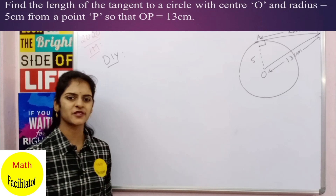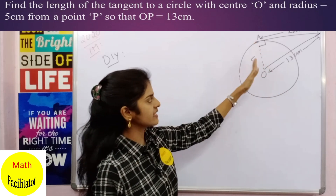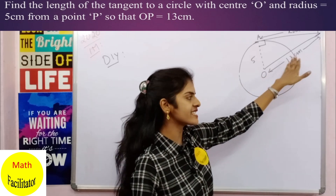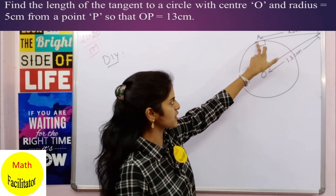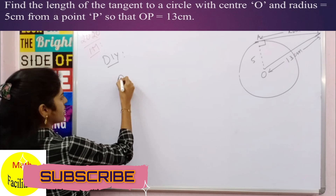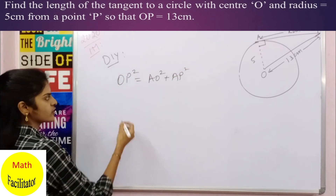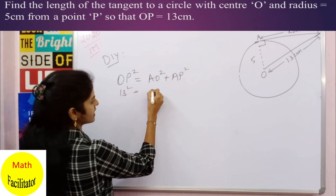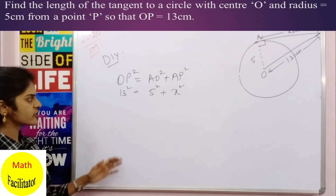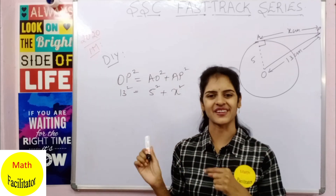Now it is your time to do it yourself. This is a similar question: the radius is 5 cm and the distance from the center to the external point is 13 cm. You have to find the length of the tangent AP. Using the same Pythagorean theorem: OP² = AO² + AP², so 13² = 5² + x². Solve for x to get the length of the tangent.